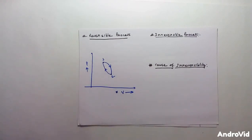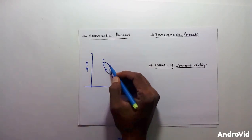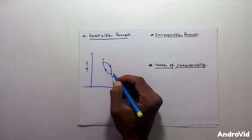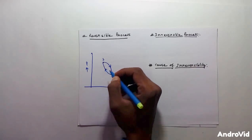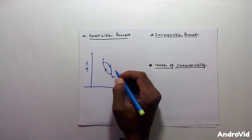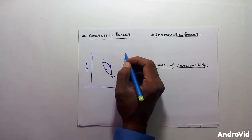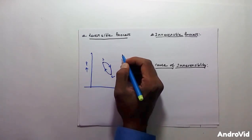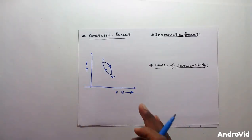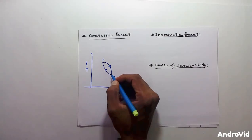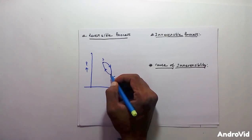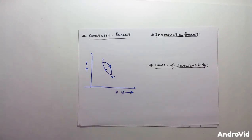Let me make it clear once again. A process 1 to 2 is said to be a reversible process if we are able to go from point 2 to 1, and by doing so there should not be any change in the system and surrounding. That means the system and surrounding should not suffer any change by going from point 2 to 1.